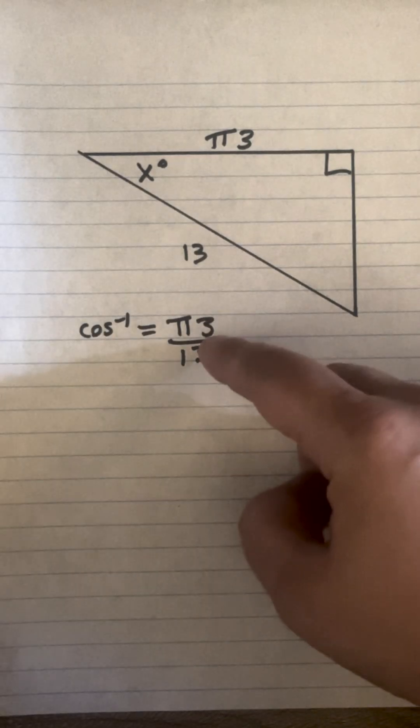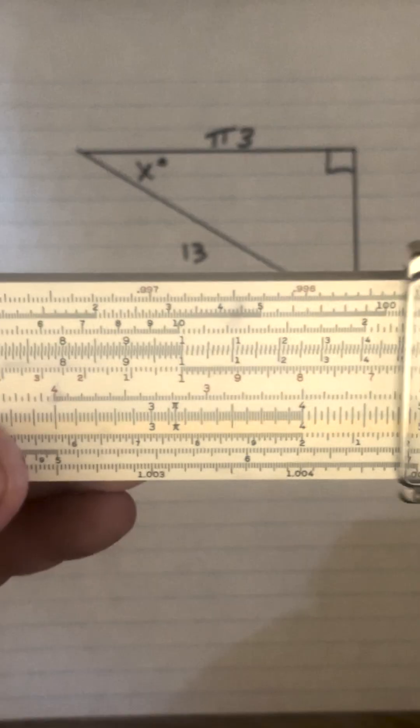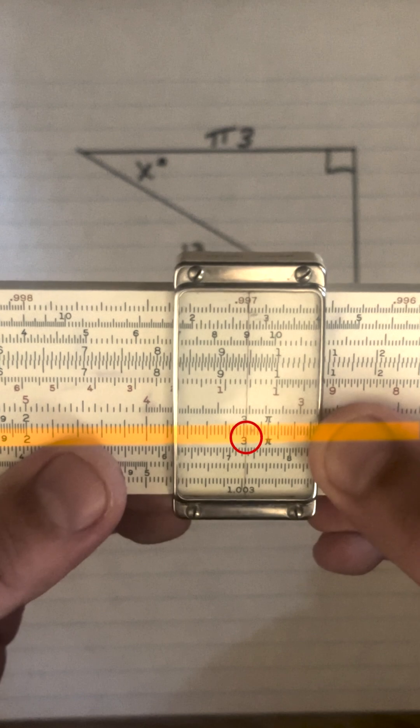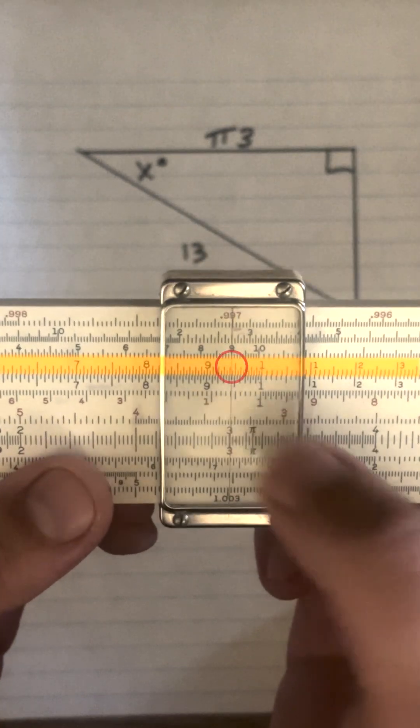Now the numerator is going to be multiplication of pi times 3. We could do that on the C and D scales, but why do that when we can just go to 3 on the D scale? And if we look up to the folded scale, that brings us to about 9.4 of 3 times pi.